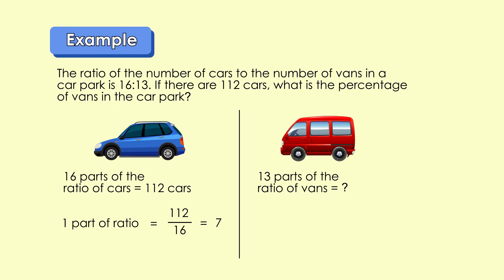From the problem, we know there are 13 parts of vans. We will multiply the 13 parts by 7, which equals 91 vans. To obtain the percentage of vans in the car park, the number of vans, which is 91, is divided by the total number of cars and vans in the car park, which is 203, and then multiplied by 100%. Thus, the percentage of vans in the car park is 44.83%.